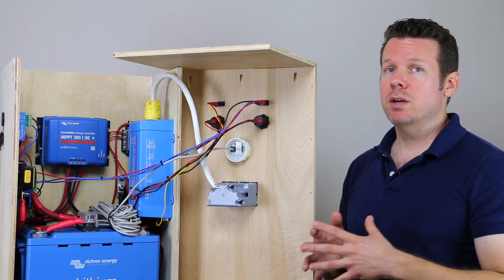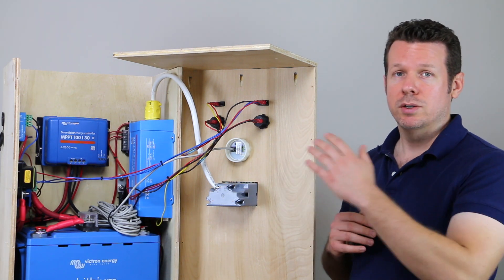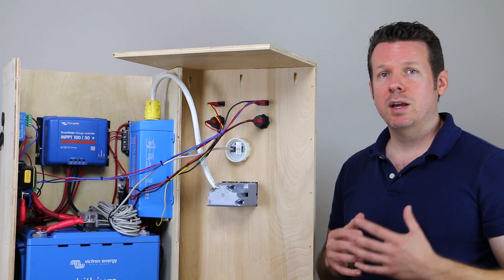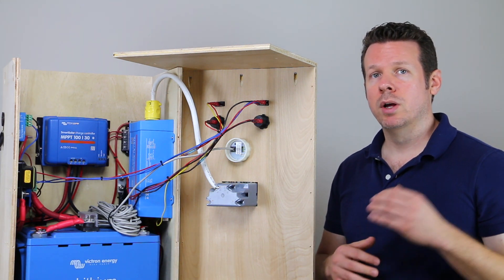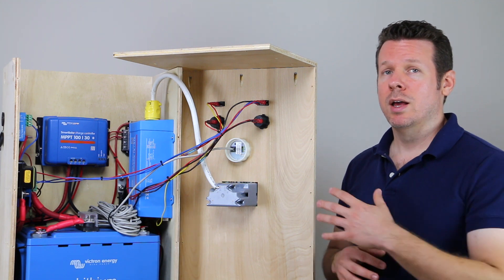And in part three of this series, we're going to go outside and we're going to test the 30 watt solar panel that you saw earlier. And we're also going to plug this into my van where we have a 300 watt panel and we're going to take some readings and see what kind of power we can get out of this unit.